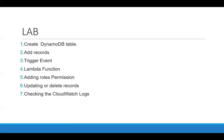In today's lab, I'll show you how to first create a DynamoDB table and add some records to it, then trigger an event using a Lambda function. I'll show you how to add permissions so the Lambda function can read data from the DynamoDB table and put logs in CloudWatch. Then we'll update or delete records and check the CloudWatch logs. Let's move on to the AWS console.